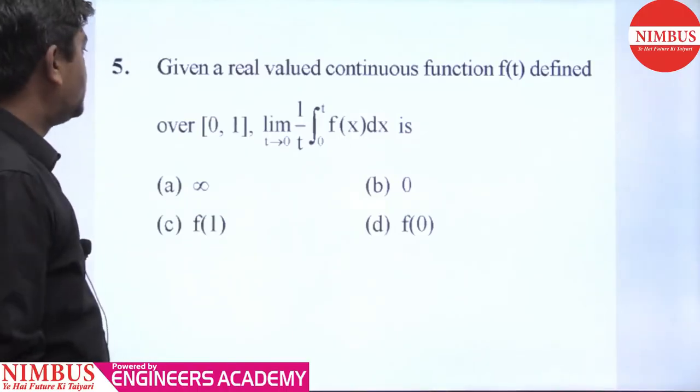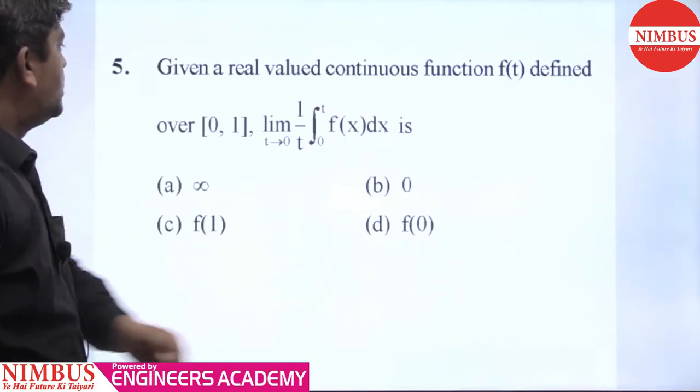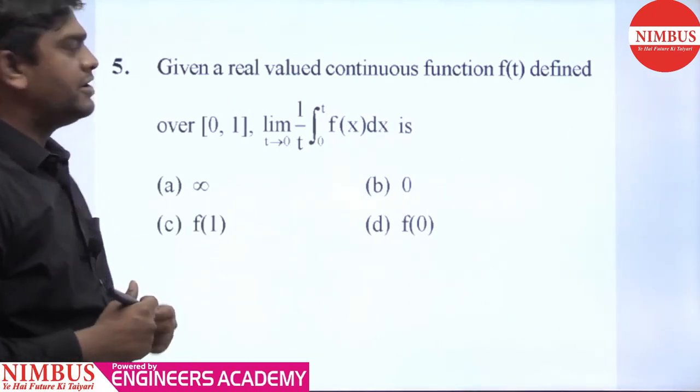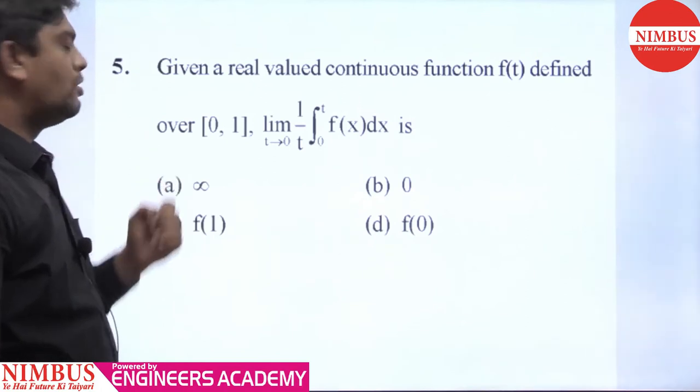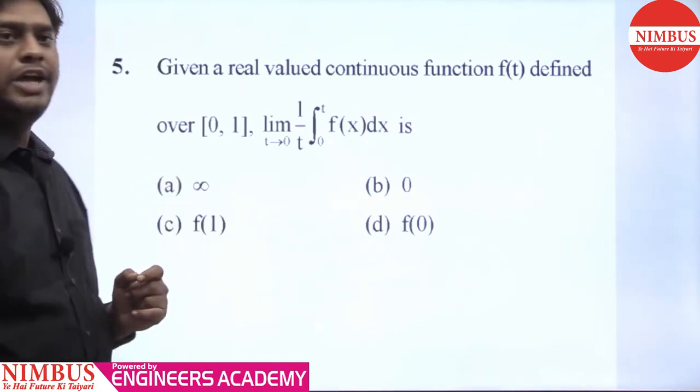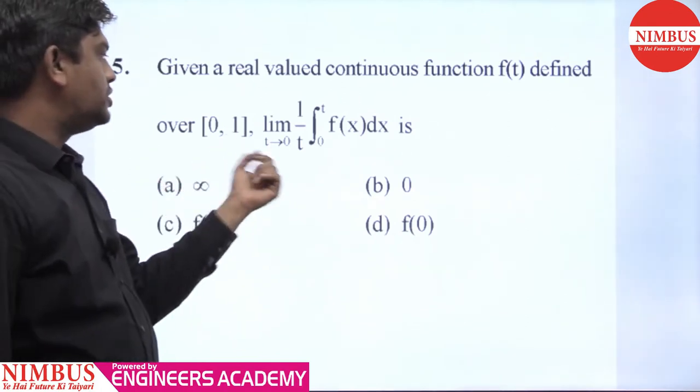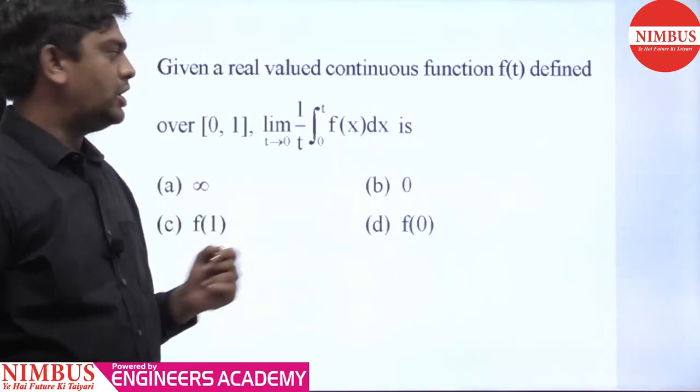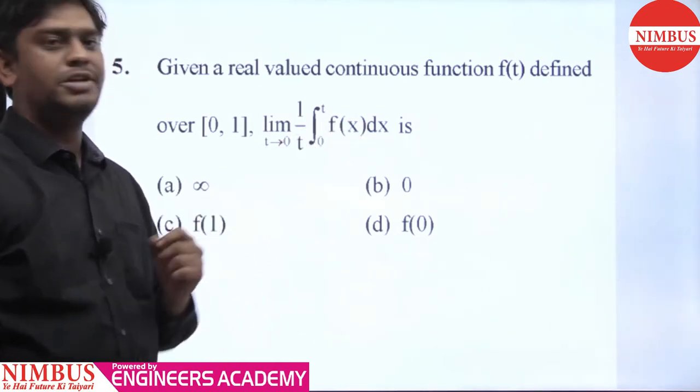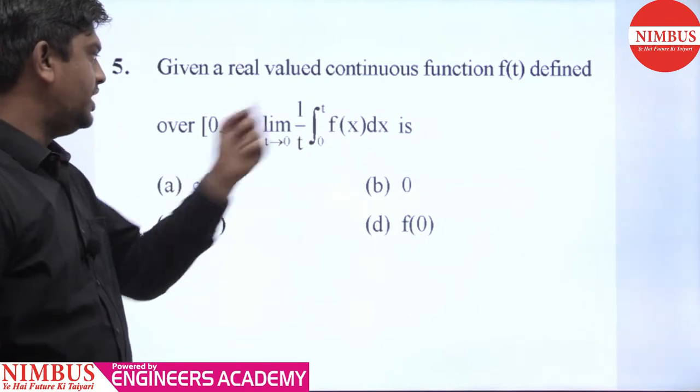This is question number 5 of the practice sheet. In this question, given a real valued continuous function f(t) defined on the closed interval [0,1], we have to evaluate the limit as t tends to 0 of 1 upon t times the integration of f(x) with respect to x, with limits of integration from 0 to t.